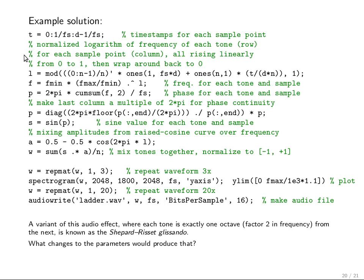So, first we define ourselves a vector for the time axis from 0 to the duration minus 1 sample length, because we started at 0 with a step size 1 over the sampling frequency. That's the sampling period. And now we first create a matrix, a matrix as long as the number of samples that we need and as high as the number of tones we have.